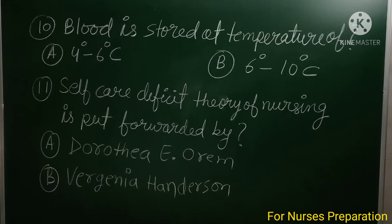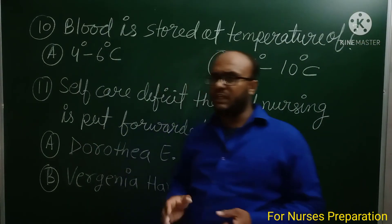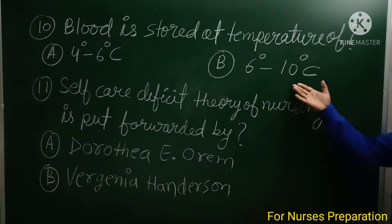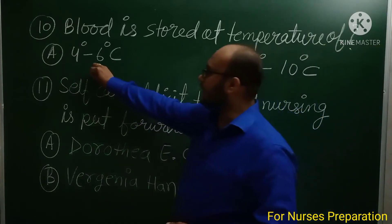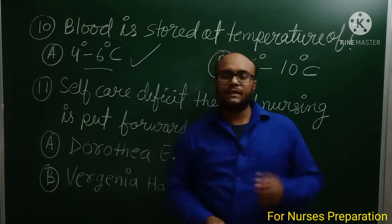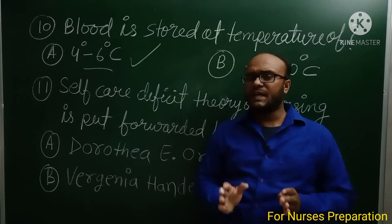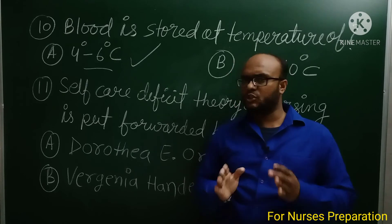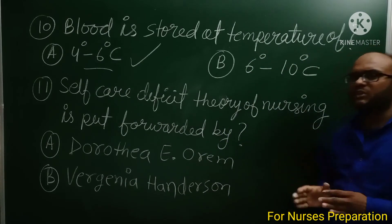Question number 10: Blood is stored at a temperature of — Option A: 4°C to 6°C, Option B: 6°C to 10°C. The right answer is Option A, 4 to 6 degrees centigrade. Remember, blood should be stored in a refrigerator at 1 to 6 degrees centigrade temperature.